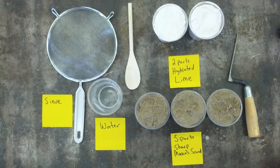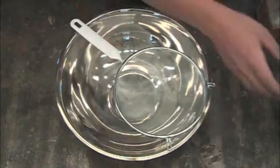To make lime mortar you'll need two parts hydrated lime, three parts mason sand, water, and a sieve.